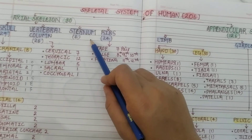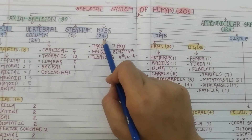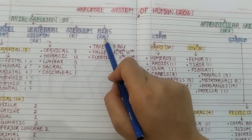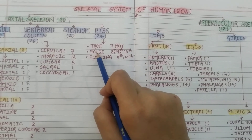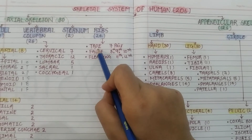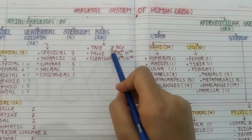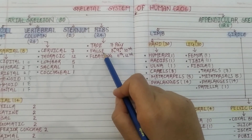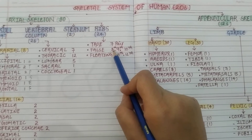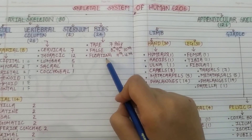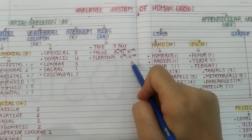The sternum is 1 bone that attaches to both sides of our ribs. For the 12 pairs of ribs, there are 24 bones in total. There are different types of ribs: true ribs, false ribs, and floating ribs. True ribs are attached to the sternum — there are 7 pairs. False ribs (8th, 9th, and 10th pairs) are not directly attached to the sternum. The 11th and 12th pairs are floating ribs, which are not attached at all.